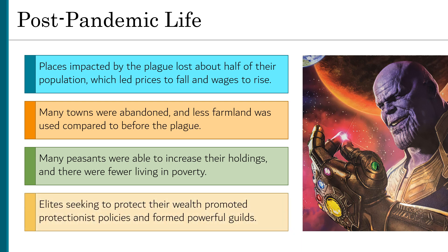Meanwhile, elites seeking to protect their wealth promoted protectionist policies and formed powerful guilds. Most people of this time did not associate themselves with their kingdom, but rather their town. Towns would put these protective policies in place, charging a tax on goods coming into the town. However, as these policies became widespread, many began to see them as a detriment. Protectionist policies were relaxed to help the town's merchants abroad seek special trade agreements.